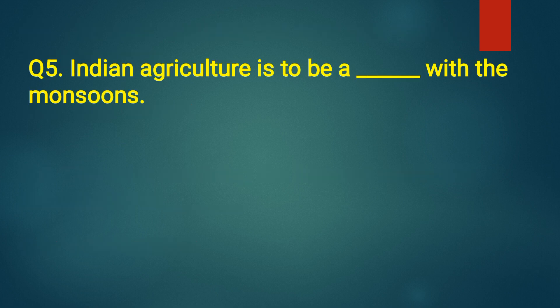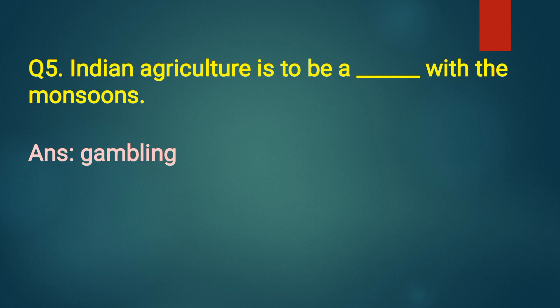Fifth one: Indian agriculture is to be a blank with the monsoon. Answer: gambling. Indian agriculture is to be a gambling with the monsoons.